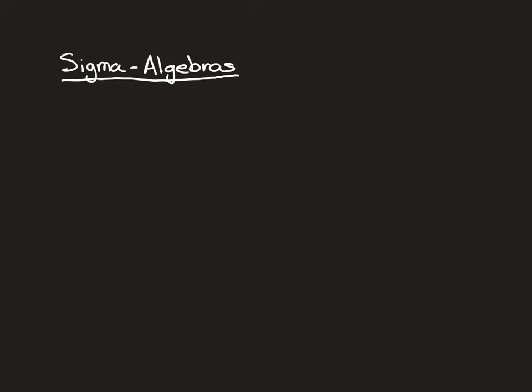This is an upgrade on the definition of an algebra. Just as algebra was an upgrade on semi-algebra, sigma algebra is an upgrade on algebra. We've got some set X, and our sigma algebra — capital sigma — is going to be a subset of the power set of X. I'm first going to write down the properties of an algebra, because a sigma algebra does obey all of those, and then we'll upgrade the second one. Property one: the empty set and the whole set have to be within the sigma algebra.